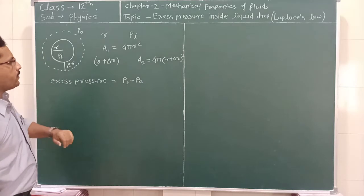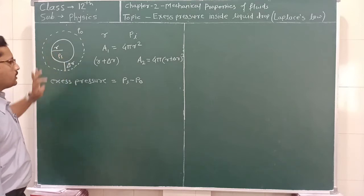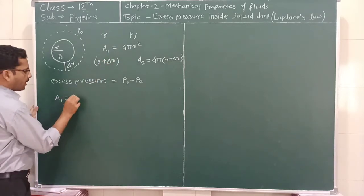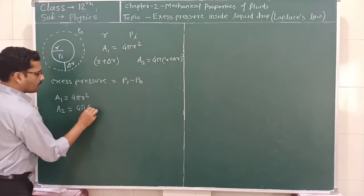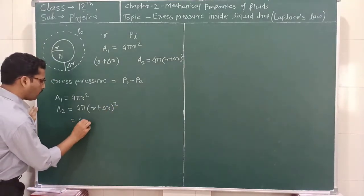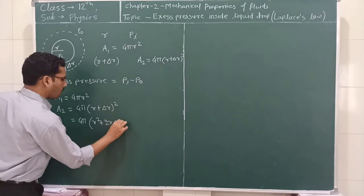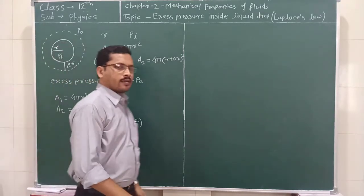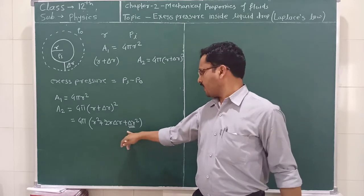What is the change in the surface area of this liquid drop when it changes its radius from R to R plus delta R? We can write A1 is equal to 4πR². And A2 is equal to 4π(R + δR)², which expands to 4π times R² plus 2R·δR plus δR². Here, δR² we can neglect because the value of delta R is very small, and if we square this value it becomes lesser and lesser. So, we can neglect δR².